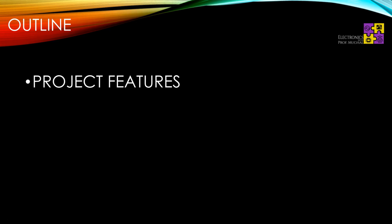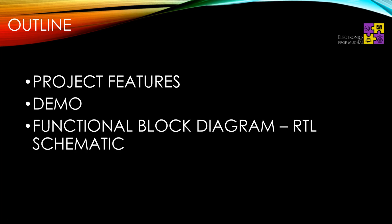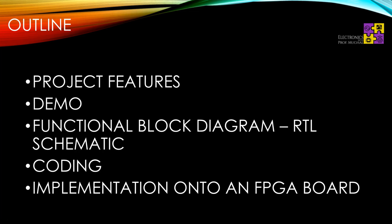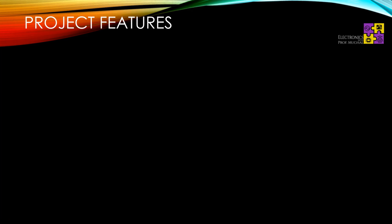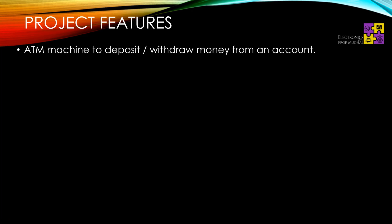Let's start with the outline for this video. We're going to first start with the project features, followed by a demo of the ATM machine, then we'll talk about the function block diagram, RTL schematic, how everything is wired up, all the modules we need to create, followed by the coding. For the sake of time I've already typed everything with comments and I'll quickly go over and explain as much as I can, then follow it up with the implementation onto an FPGA board.